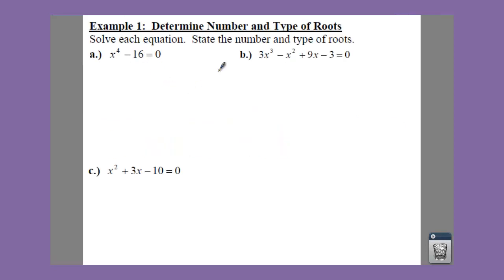So when we look at example one, when we have to solve each of these equations, we can state our number and type of root. Looking at your four here, we know we're going to need to get four answers at the end. So let's factor this. This is a difference of squares. Instead of just saying x plus four and x minus four, we actually have x squared and x squared.